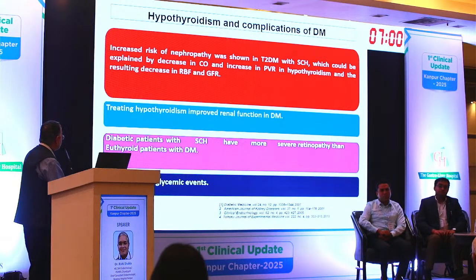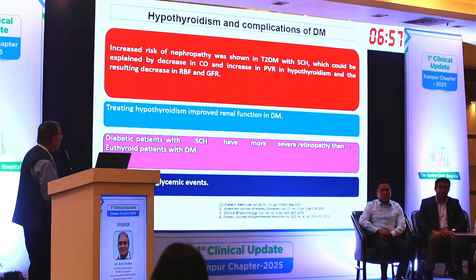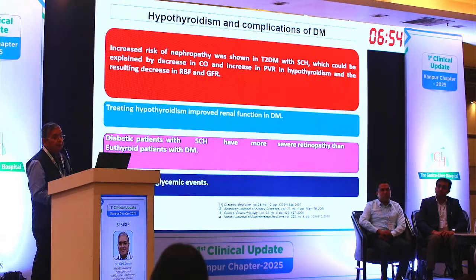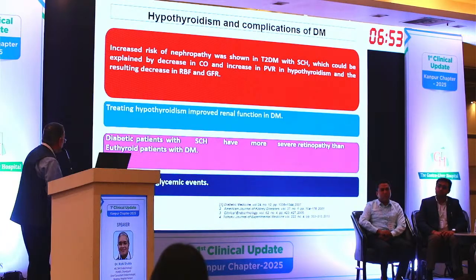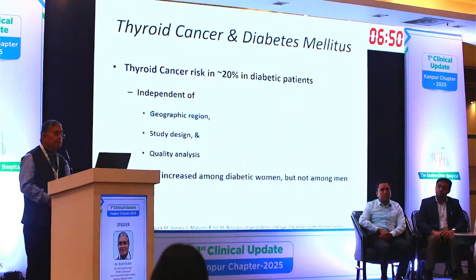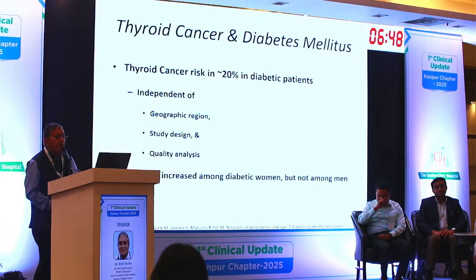Diabetic patients with subclinical hypothyroidism have more severe retinopathy than euthyroid patients. Another important clue is frequent hypoglycemia. Now a word about cancers.